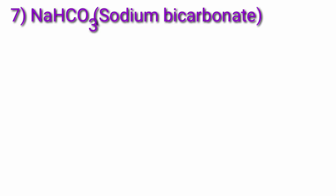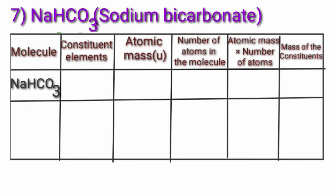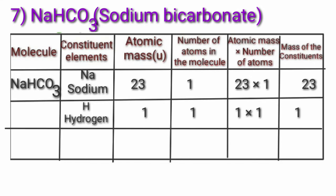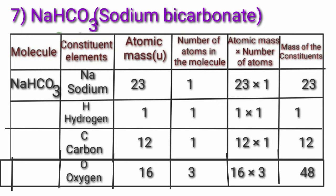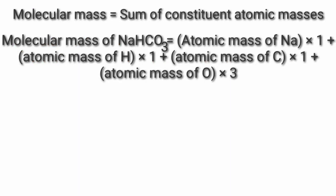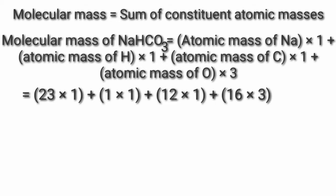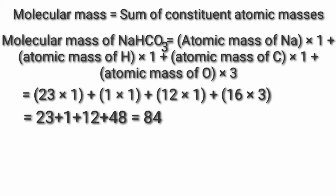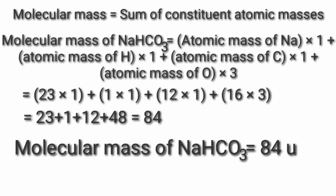Seventh, NaHCO₃ — sodium bicarbonate. Constituent elements: sodium atomic mass 23, hydrogen atomic mass 1, carbon atomic mass 12, oxygen atomic mass 16. Molecular mass of NaHCO₃ = (23×1) + (1×1) + (12×1) + (16×3) = 23 + 1 + 12 + 48 = 84. So molecular mass of NaHCO₃ is equal to 84 Dalton.